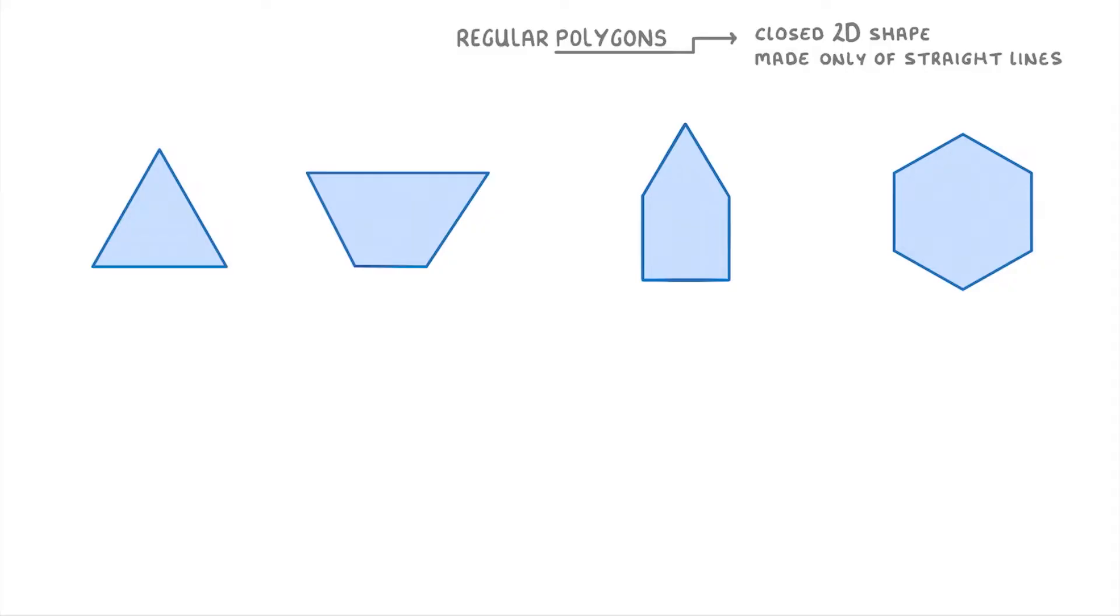Whereas shapes like these three wouldn't count, because this first one is open rather than closed because these lines aren't connected, this second one is 3D rather than 2D, and this third one has a curved line, whereas in a polygon they all have to be straight lines.